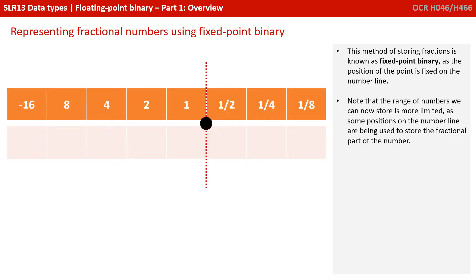This method of storing is known as fixed point binary, as the position of the point is fixed on the number line. Note that the range of numbers we can now store is more limited, as some positions on the number line are now being used to store the fractional part of the number. The biggest positive number we can now store in this 8-bit format is 01111111, an 8 plus a 4 plus a 2 plus a 1, plus a half, quarter and an eighth, or 15.875.